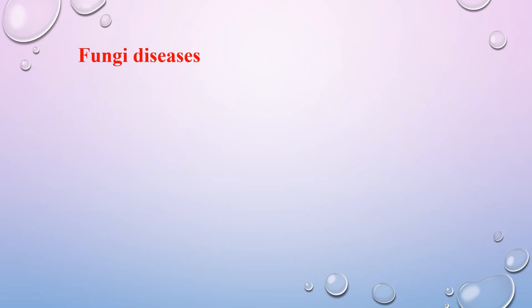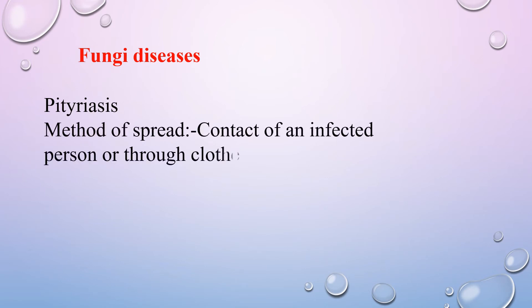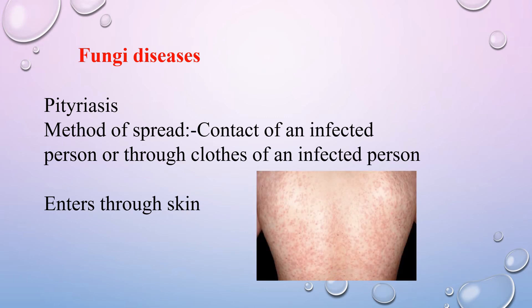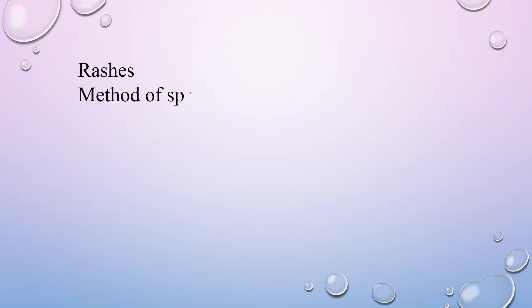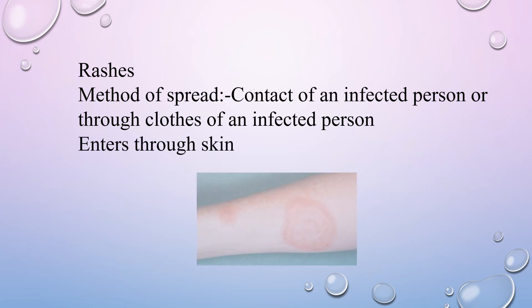Next are fungal diseases. Pityriasis spreads through contact with an infected person or through their clothing, entering through the skin. Symptoms include large, slightly raised, scaly patches called the herald patch on the back, chest, or abdomen. Another fungal disease, scabies, also spreads through contact with an infected person or their clothing and enters through the skin. Its symptoms are itchiness and skin redness.